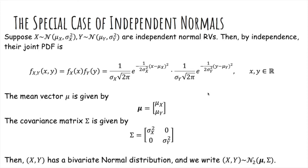And so we'll say X, Y has a bivariate normal distribution, and we'll write that X, Y is normal, and the 2 is because there's two dimensions, and has mean vector mu and covariance matrix sigma.